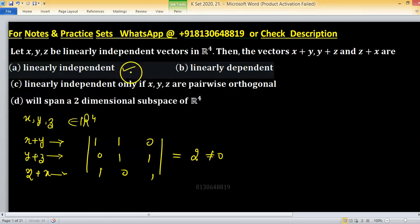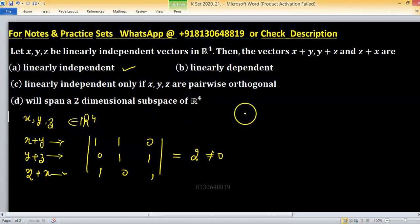If I apply elementary row operation on these and make entries such as pivot position, so how could we do? So equivalent matrix is 1,1,0.